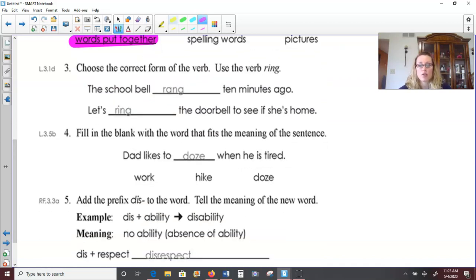Number three, choose the correct form of the verb. Use the verb ring. This is another irregular verb. So when in the past tense, it does change. The school bell blanked 10 minutes ago. So this would be in the past. We would say the school bell rang. Change that I to an A. The school bell rang 10 minutes ago. Let's ring the doorbell to see if she's home. We would use the present tense verb ring. Let's ring the doorbell.